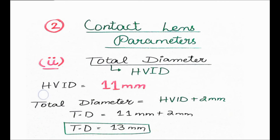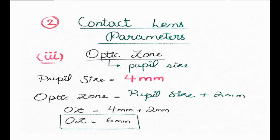The third parameter is the optic zone, which is the central area that provides the power. The optic zone can be calculated using the pupil size of the patient. We measured the pupil size as 4 mm. To calculate the optic zone, we add 2 mm to the pupil size: 4 mm + 2 mm = 6 mm. So the optic zone diameter for this patient is 6 mm.